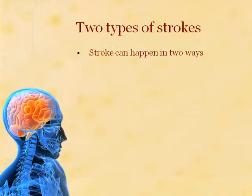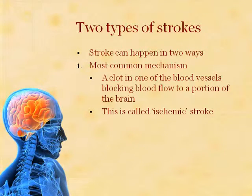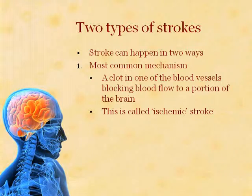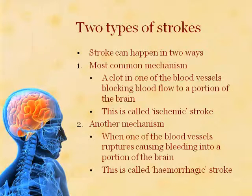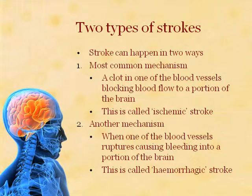Broadly speaking, there are two types of strokes. The most common mechanism is when there is a clot in one of the blood vessels, blocking the blood flow to that portion of the brain — we call this an ischemic stroke. Ischemia means restriction of blood supply to any tissue. The second mechanism is when one of the blood vessels coursing through the brain tissue ruptures, causing bleeding into that portion of the brain. We call this a hemorrhagic stroke. As you can see, there is a huge difference between these two types of strokes.